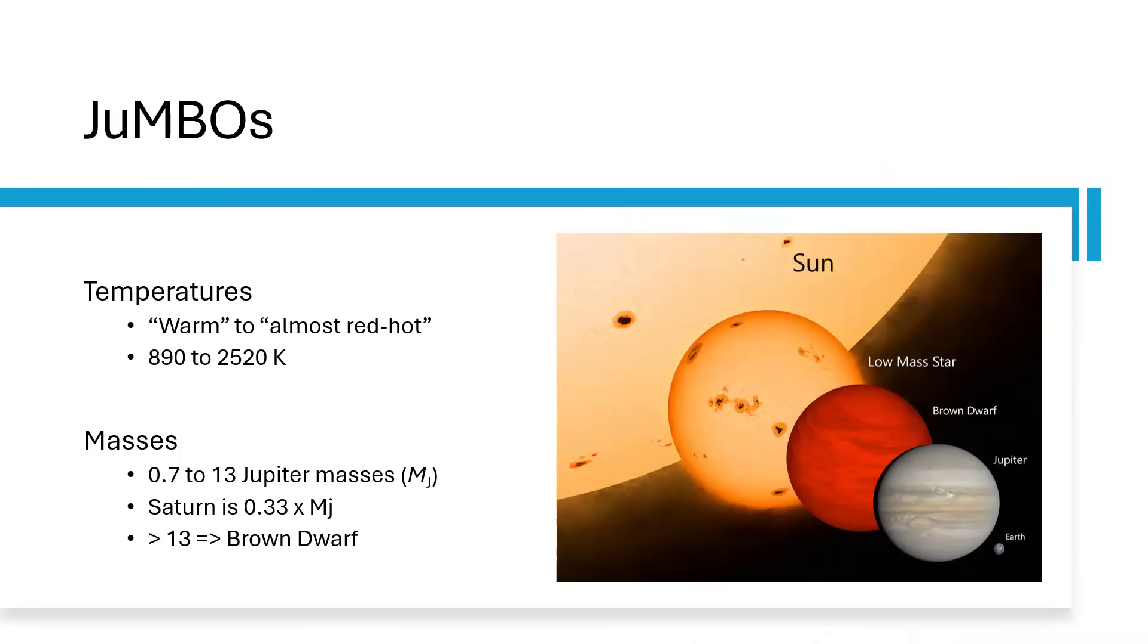These objects are somewhere in the range 890 to 2520 Kelvin. That's warm, well pretty hot actually. 900 degrees is getting fairly hot, but 2500 is not quite red hot which would be about 3000. These are the sort of temperatures you get increasing with mass for these subdwarfs, these Jupiter mass objects, somewhere between 0.7 and 13 Jupiter masses.